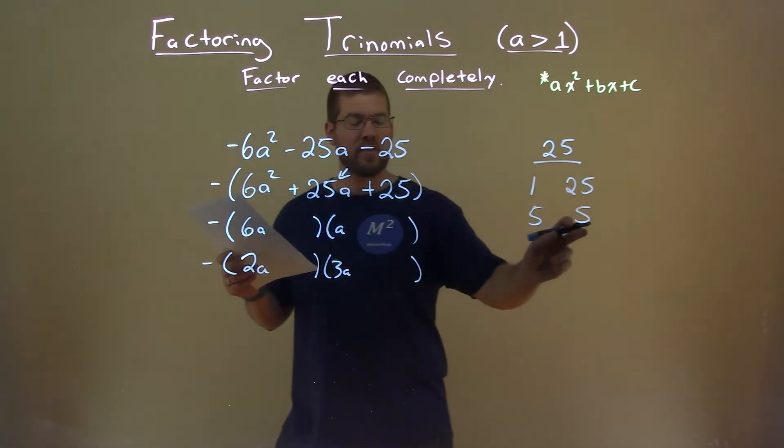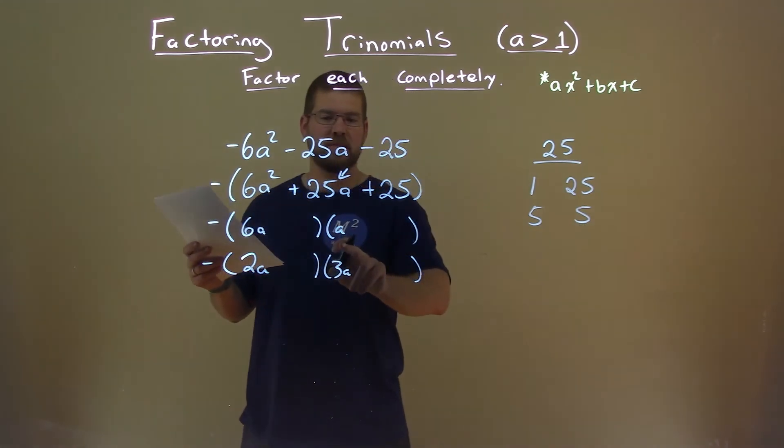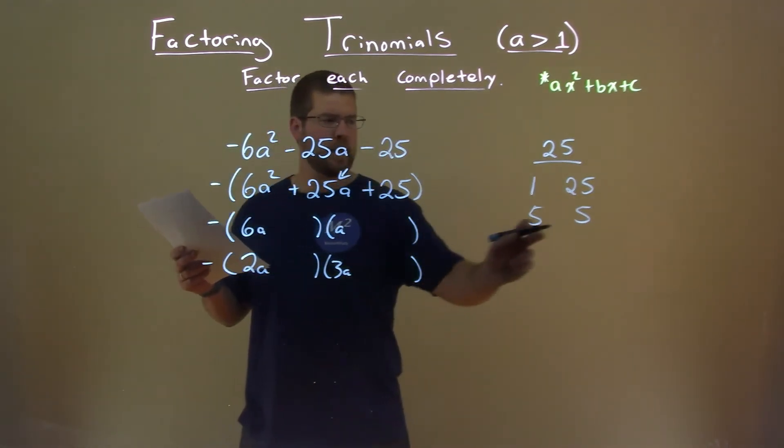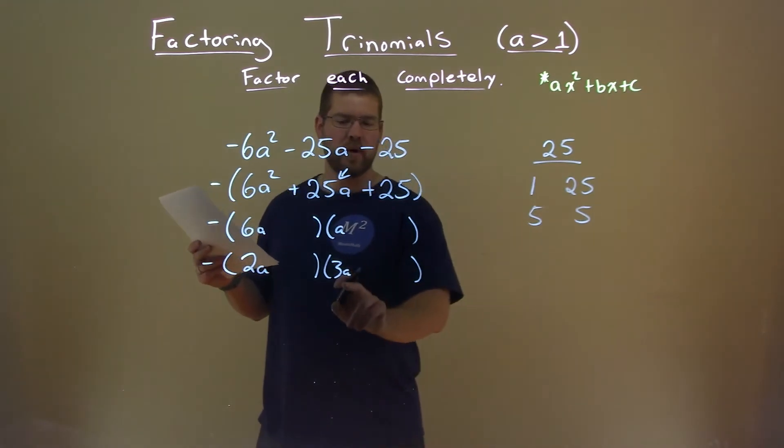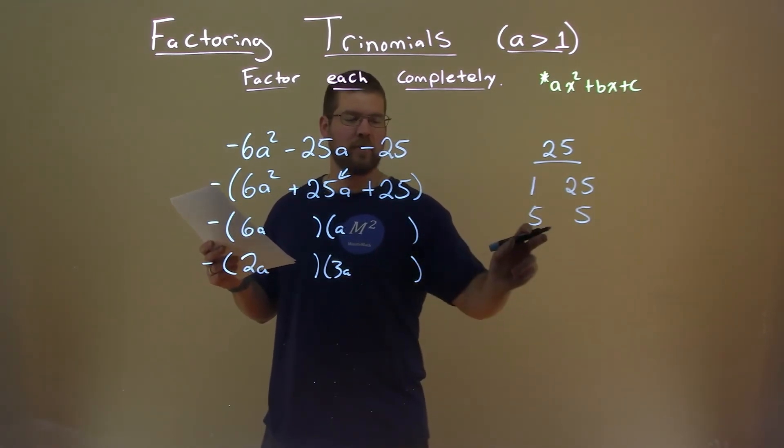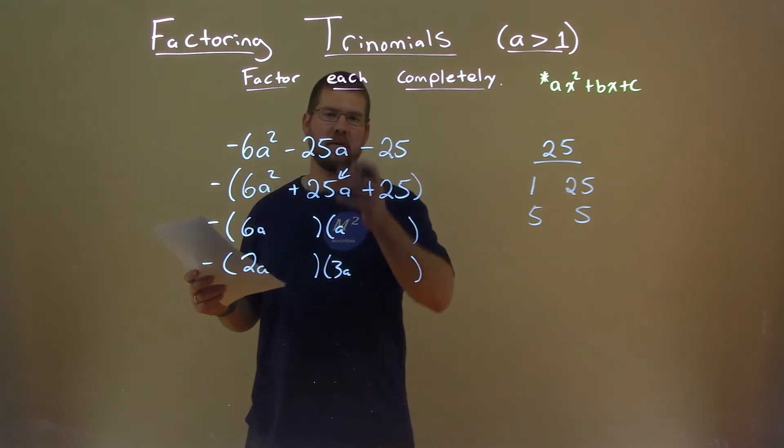What about 6 times 5 is 30, plus 5 is 35? No. What about here? 2a times 5 is 10a. 3a times 5 is 15a. Add them together, we got 25.